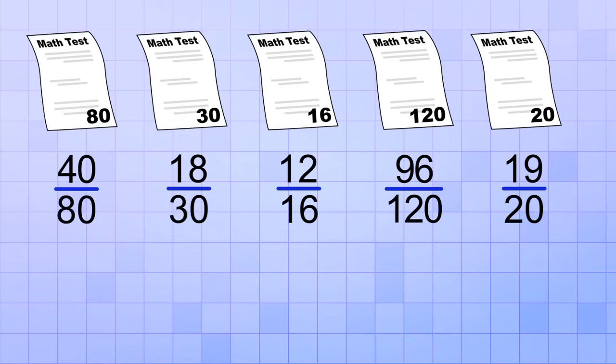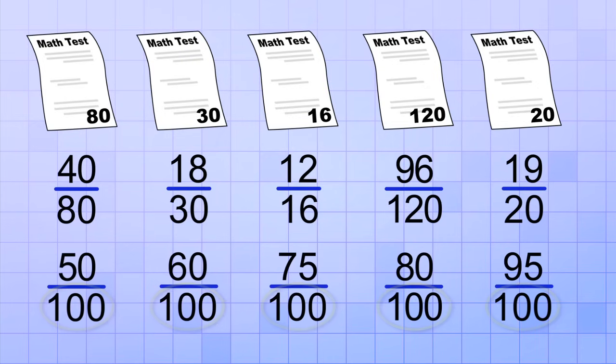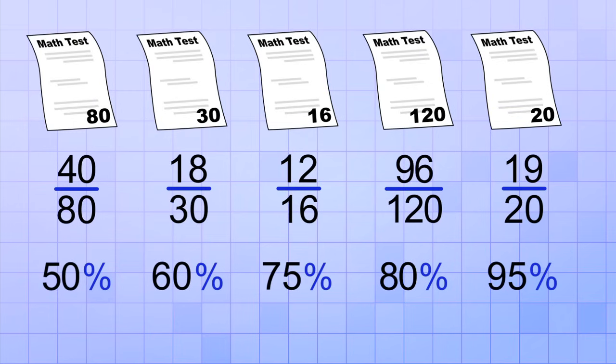Since each test score looks really different, it's not so easy to tell how well the student did, or to see how their scores changed over time. But what if we convert each of these scores into an equivalent fraction with 100 as the bottom number? In other words, their equivalent percent form.